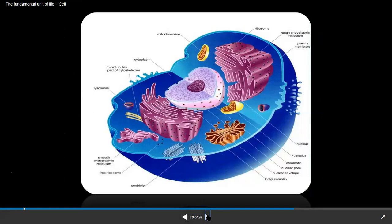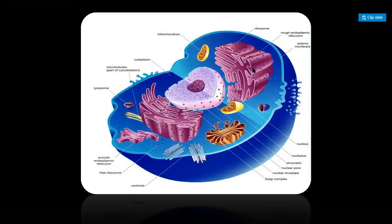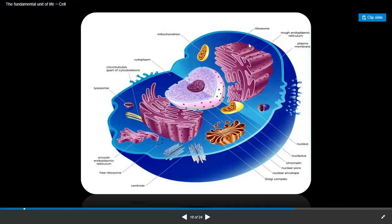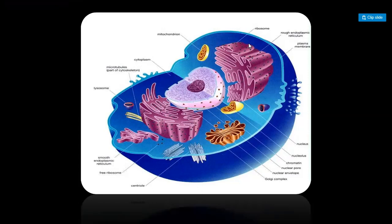Looking at the diagram, you can see everything discussed here in a wider form. The yellow structure is the mitochondria — the powerhouse of the cell, which contains most of the energy in the form of ATP, adenosine triphosphate. The purple structures are ribosomes. As mentioned, ribosomes occupy a large part of the cell and their role is to synthesize proteins.